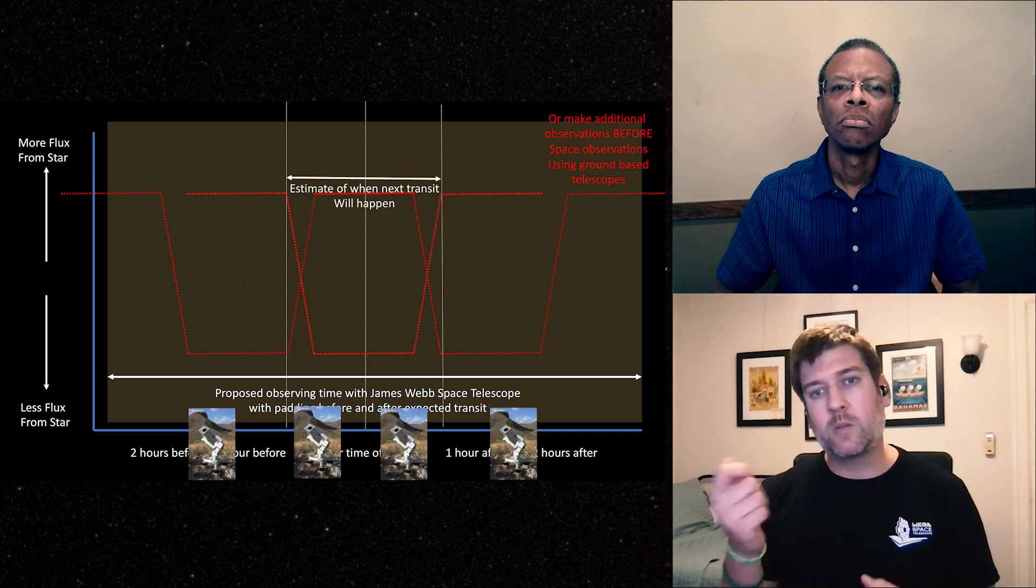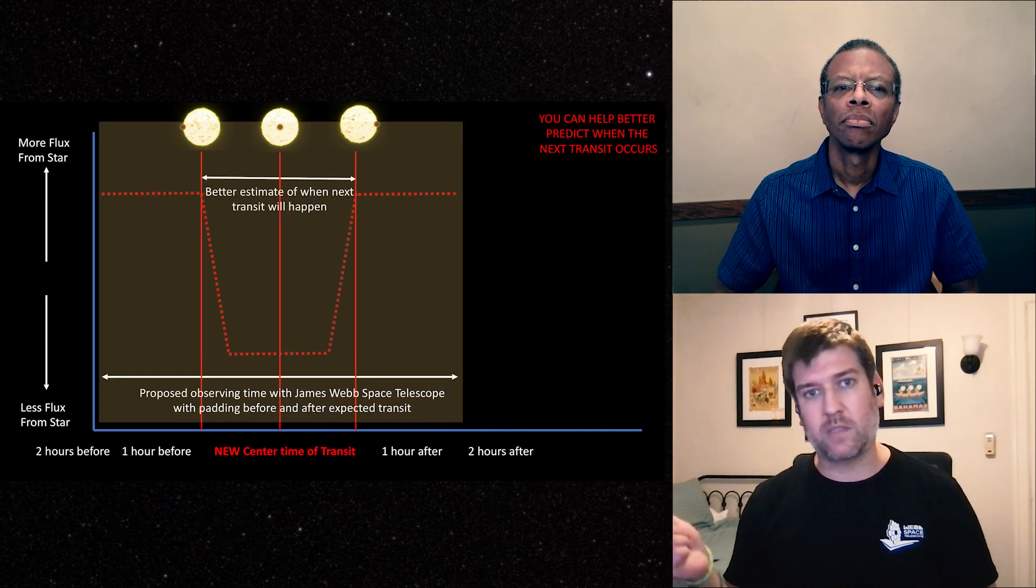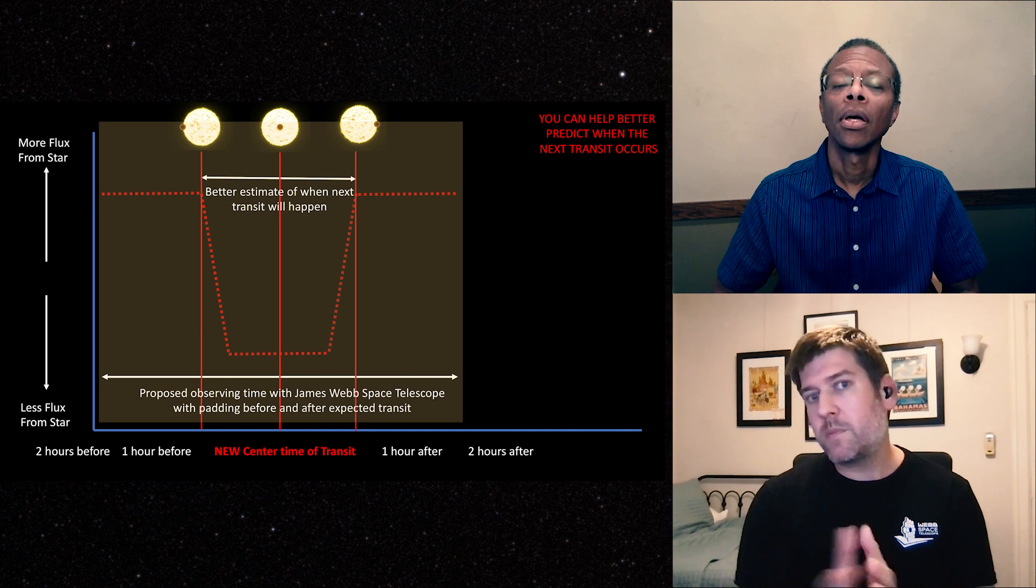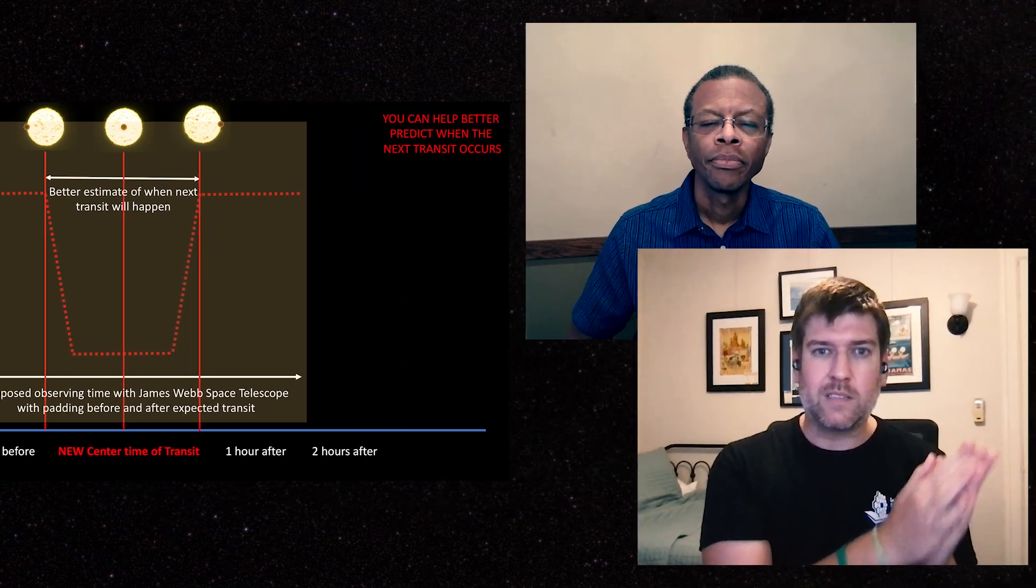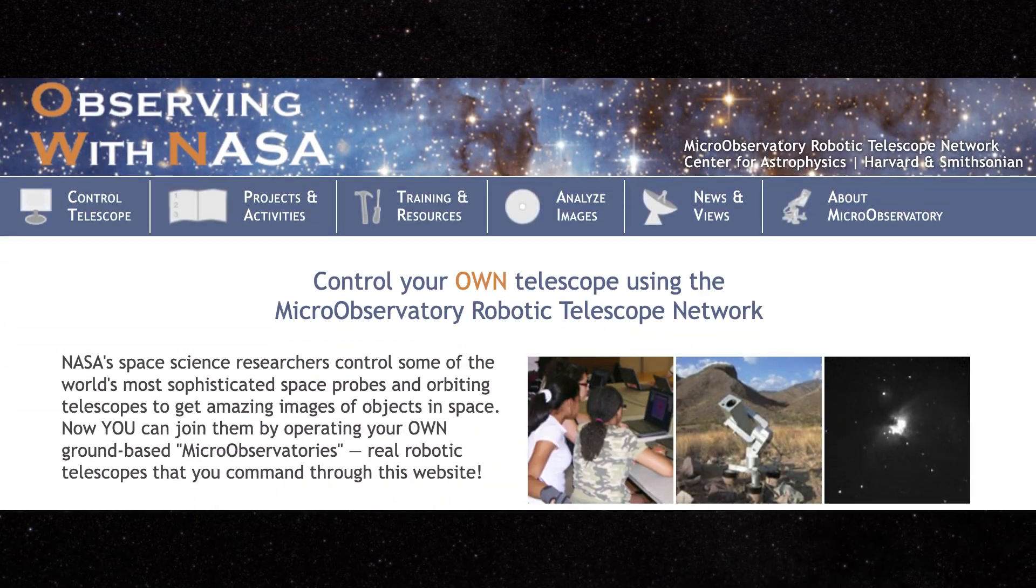The problem with building in additional overhead is that it's not really an efficient use of these resources. Everyone wants to, rightly so, use Hubble and James Webb. They're amazing instruments and the entire astronomy community is basically fighting for the time. It's very few and far between. It's very precious. And this is exactly where citizen scientists can join and help us out.